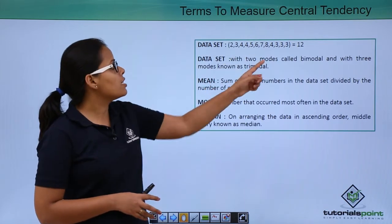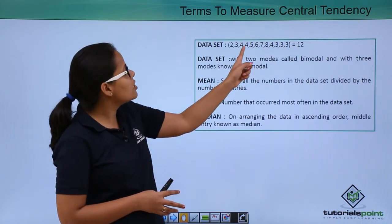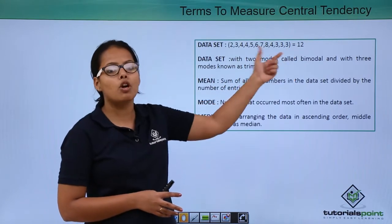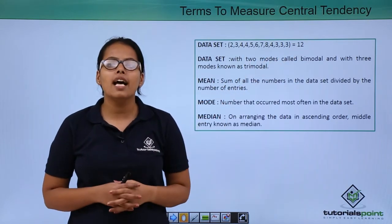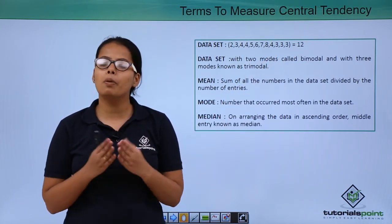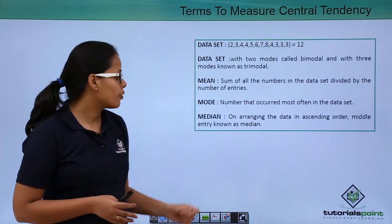In this dataset you can see that 3 is the most occurred digit because it has occurred 4 times. So 3 will become the mode of this dataset.